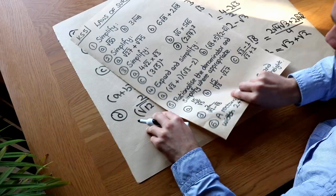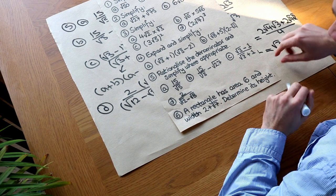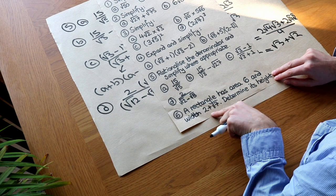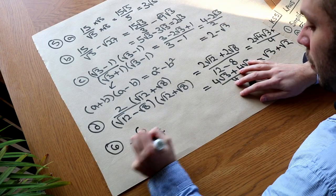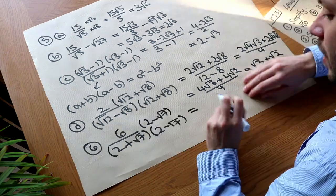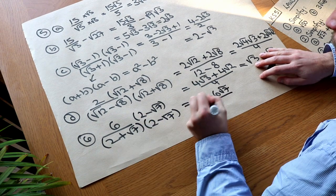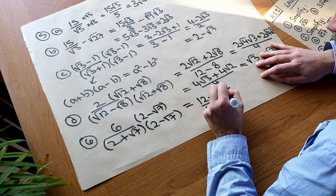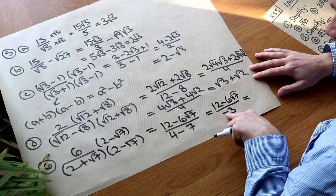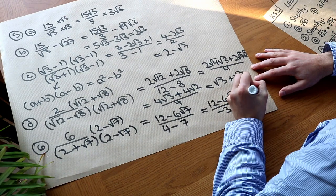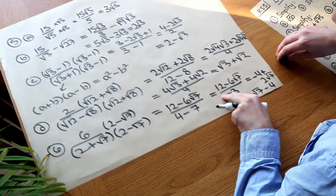Finally, an applied question: a rectangle has area 6 and width (2 + root 7); find its height. Since area equals width times height, the height is area divided by width: 6 over (2 + root 7). Multiplying top and bottom by the conjugate (2 minus root 7): the top becomes 12 minus 6 root 7, and the bottom is 2 squared minus root 7 squared, which is 4 minus 7 = minus 3. So we get (12 minus 6 root 7) over minus 3. Dividing: 12 over minus 3 is minus 4, and minus 6 root 7 over minus 3 is plus 2 root 7. Written neatly: 2 root 7 minus 4.